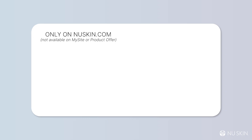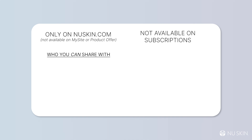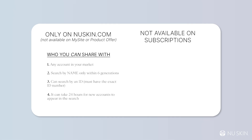Just to recap: the preview tool is only on newskin.com — it's not going to show up if you log in on my site or product offer. Preview items are not available on subscription. You can share with any account that is in your market; they have to ship to an address that is in that market. When searching by name it's only going to show six generations deep, so if you want to send to someone beyond that you need their ID number. It can take 24 hours for brand new accounts to show up in that search.